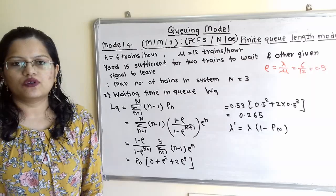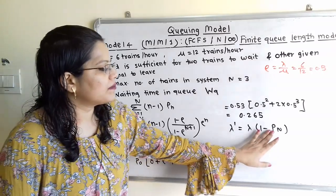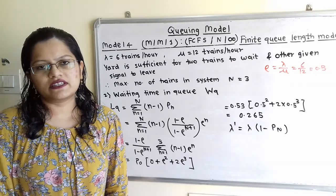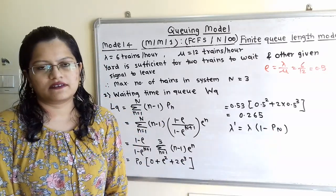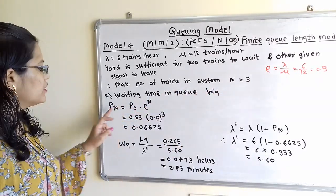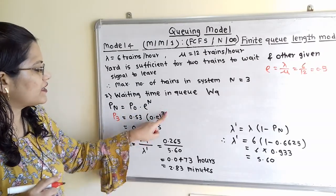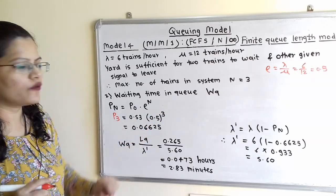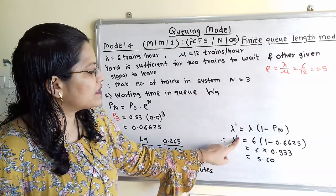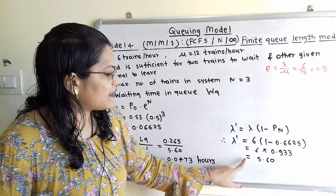Now we calculate the effective arrival rate λ' = λ × (1 − P(N)) = λ × (1 − P(3)). First, P(3) = P(0) × ρ^3 = 0.53 × 0.5^3 = 0.06625. So λ' = 6 × (1 − 0.06625) = 6 × 0.93375 = 5.60 trains/hour.